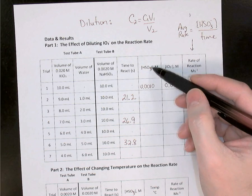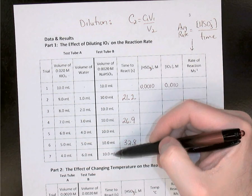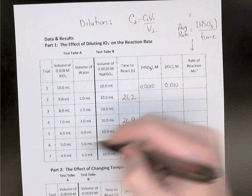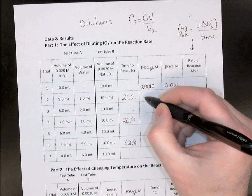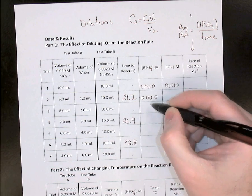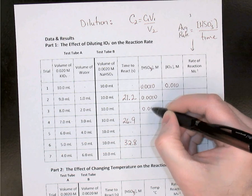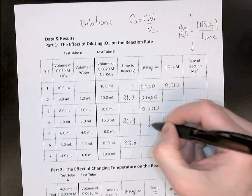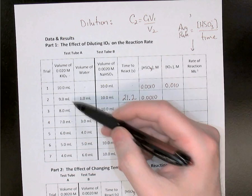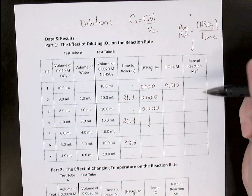The bisulfite concentration we're not changing — we used 10 mL in every trial with a total of 20 mL — so its concentration is not going to change. You can fill that number all the way down the table. The iodate, though, we were diluting, so its concentration will be changing.